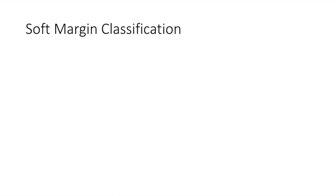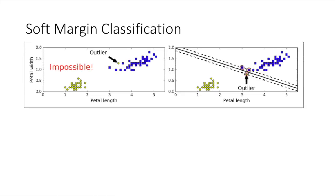If we strictly impose that all instances be off the street and on the right side, this is called hard margin classification. There are two main issues with hard margin classification. First, it only works if the data is linearly separable, and second, it is quite sensitive to outliers.